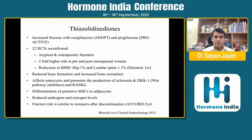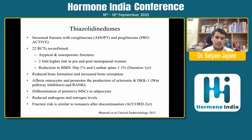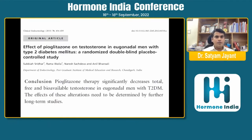Reduced bone formation and increased bone resorption are the key inciting mechanisms. Pioglitazone increases osteosides and promotes production of sclerostin, DKK1, and RANKL. DKK1 is involved in the Wnt pathway, important in bone formation. Glitazones also promote differentiation of primitive mesenchymal stem cells into adipocytes and reduce androgen and estrogen levels, further increasing osteoporosis. Fracture risk returns to that of non-users after discontinuation, as shown in the ACCORD study.